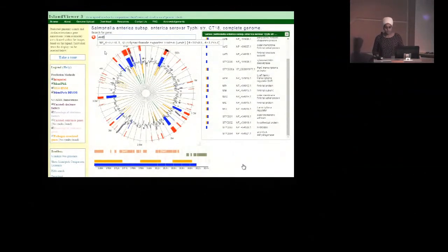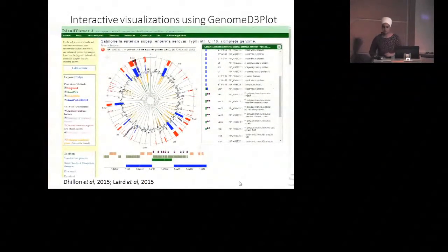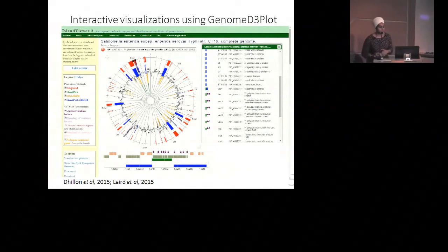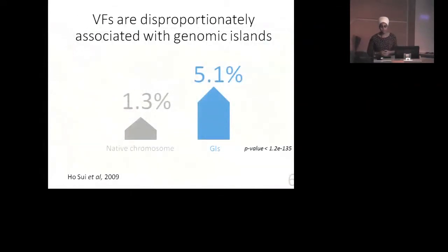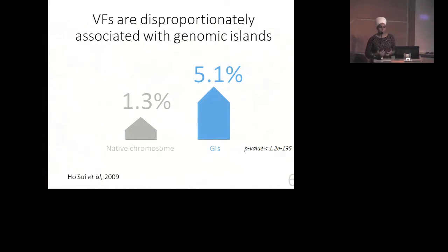We've really built this as an interactive, flexible interface to visualize your microbial genomes. Now I want to talk about some large-scale applications of these datasets. I previously mentioned that virulence factors are disproportionately associated with genomic islands — we see roughly 5% of the genes in genomic islands are virulence factors, compared to only 1% in the rest of the chromosome, and this difference is highly significant. We're also under-predicting genomic islands, meaning we may have false negatives, so this difference might actually be even higher.